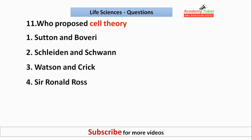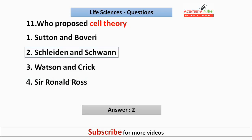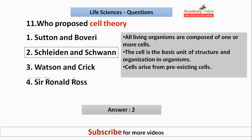Who proposed cell theory? The answer is Schleiden and Schwann. According to cell theory, all living organisms are composed of one or more cells. The cell is the basic unit of structure and organization in organisms, and cells arise from pre-existing cells.